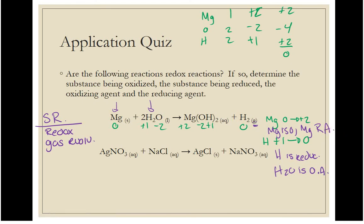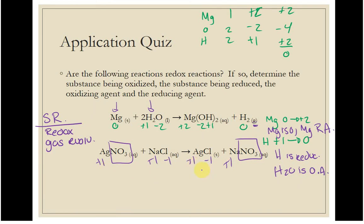Last check: silver nitrate reacting with sodium chloride to produce silver chloride and sodium nitrate. Silver is plus one, nitrate is minus one, sodium is plus one, chloride is minus one — everything stays the same on both sides. No change in oxidation state, so this is NOT a redox reaction. It is a double replacement reaction — compound, compound to compound, compound — and it's a precipitation reaction, which will be covered in the next video.